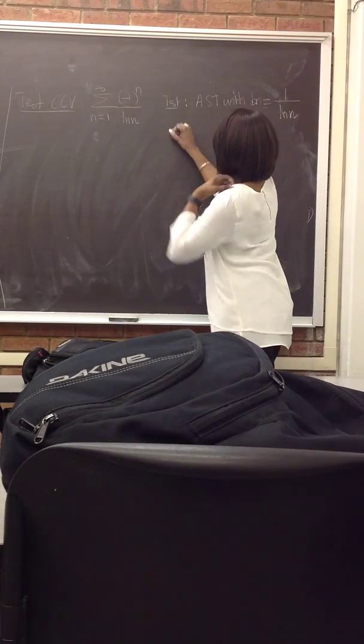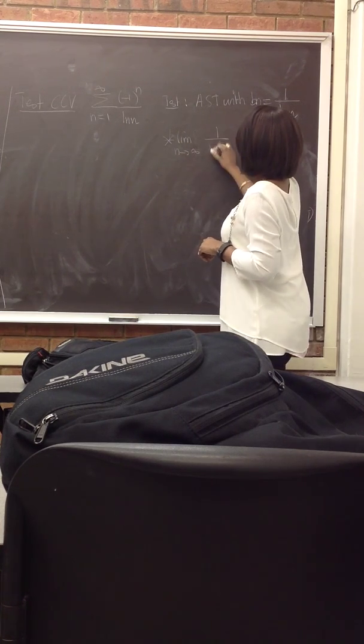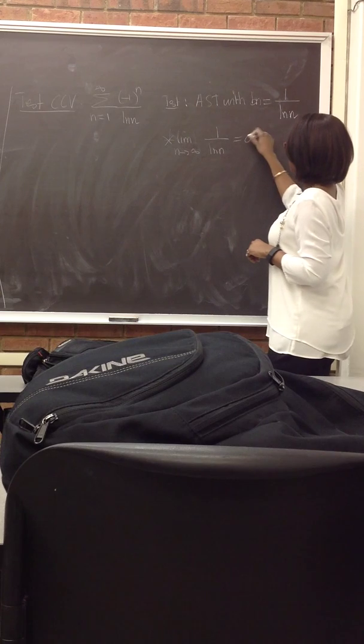All right, so b_n is 1 over natural log of n, so limit as n approaches infinity of 1 over natural log of n is equal to 0. Great.